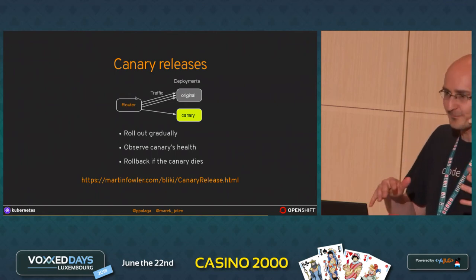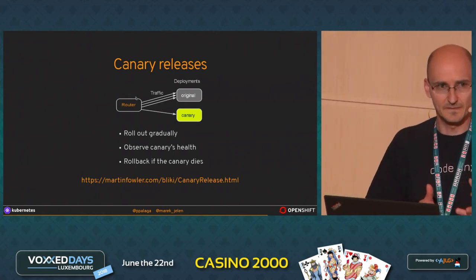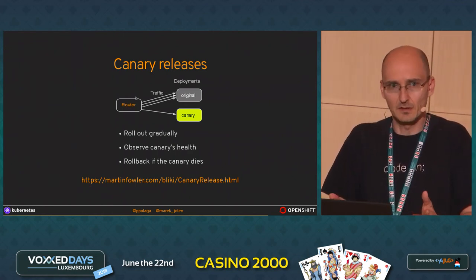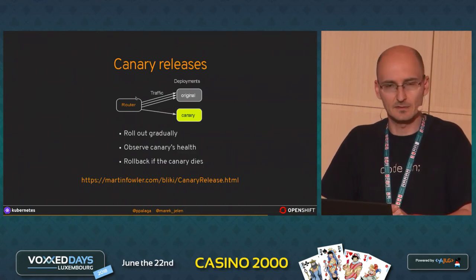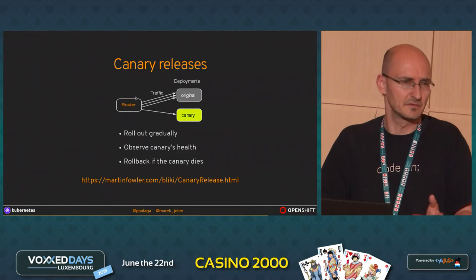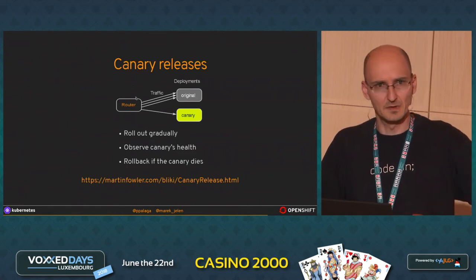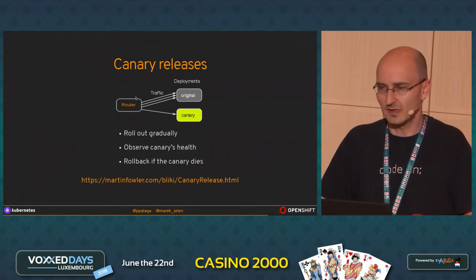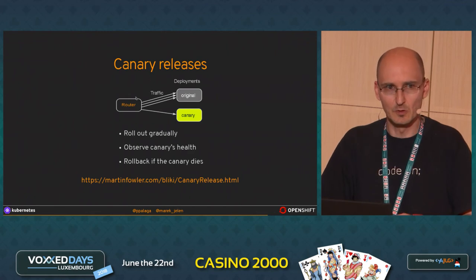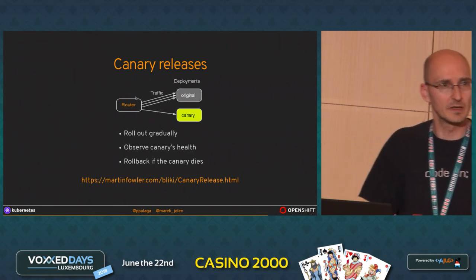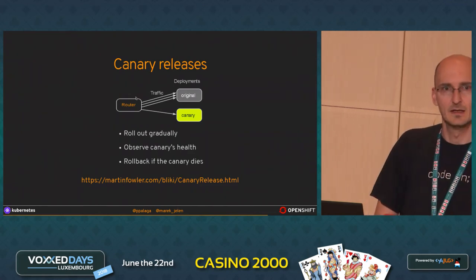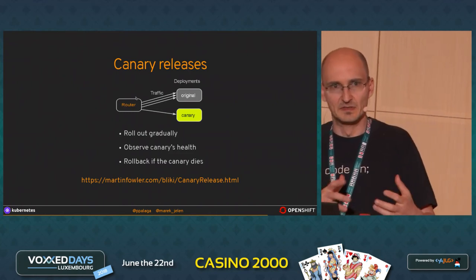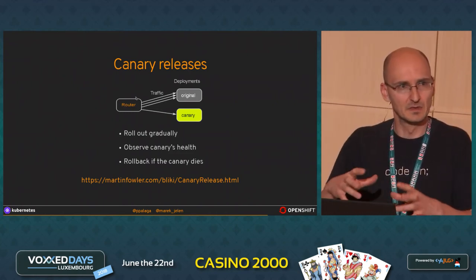We observe the health of the canary. How we do it is hard to explain in this presentation. We are doing something very simple using means offered by Spring Boot, which is by no way a sufficient solution for production. You probably want to have proper monitoring with metrics and some threshold set, so that you really get an aggregated view of the application health. And once you have it, in every moment you can decide if the canary is healthy or not.